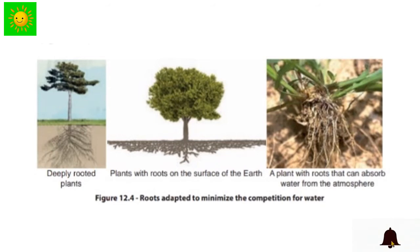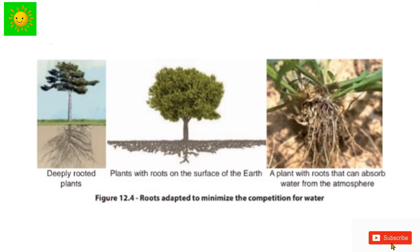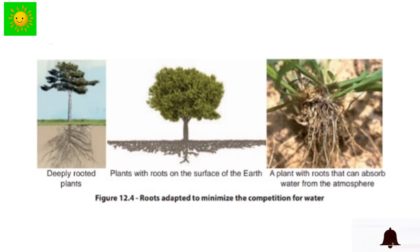Let's see how biodiversity helps to minimize the competition for water. The roots of different trees are adapted to take water from different levels in the soil. Now you can see roots adapted to minimize the competition for water: the first type is deeply rooted plants; the second type is plants with roots at the surface of the earth; and the third type shows plants with roots that can absorb moisture from the atmosphere. So they are adapting to minimize competition for water.